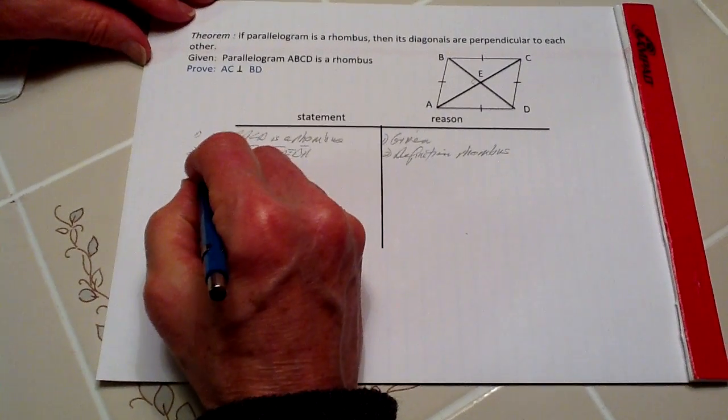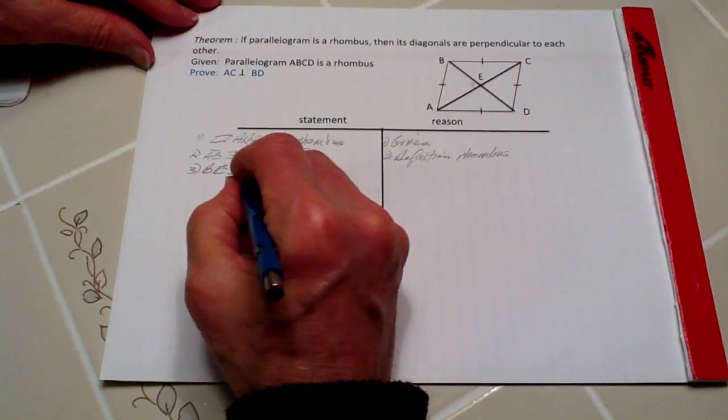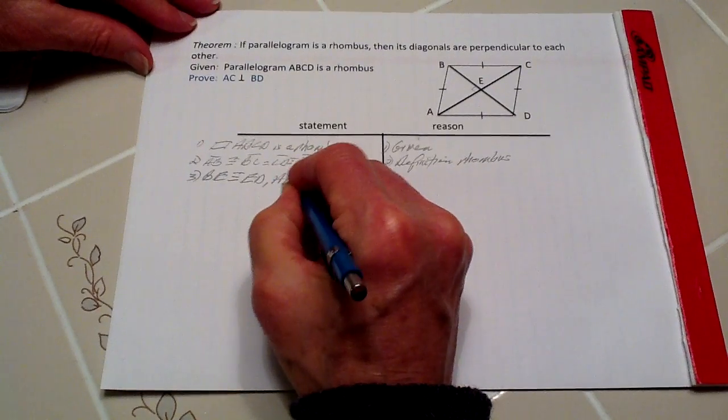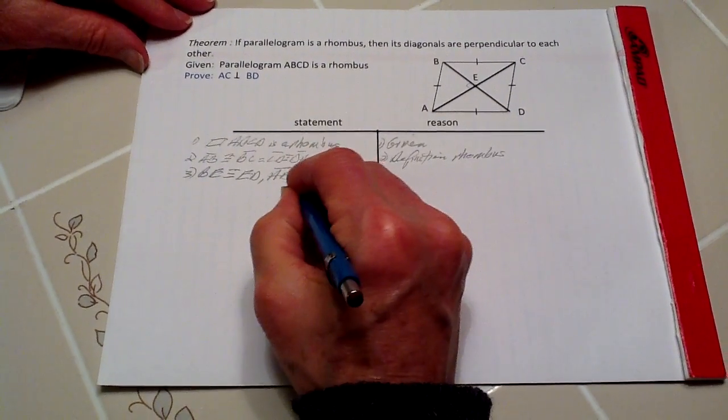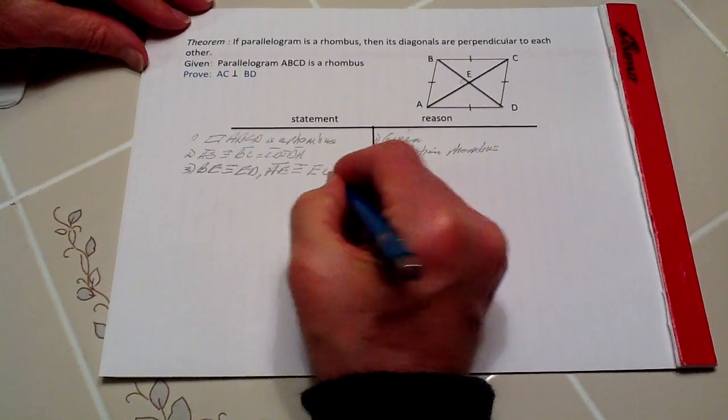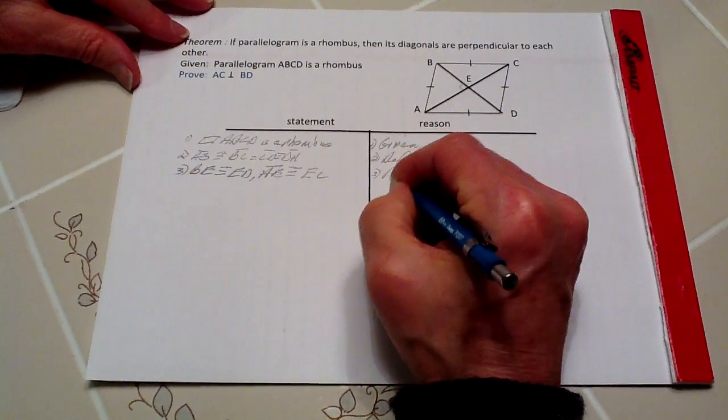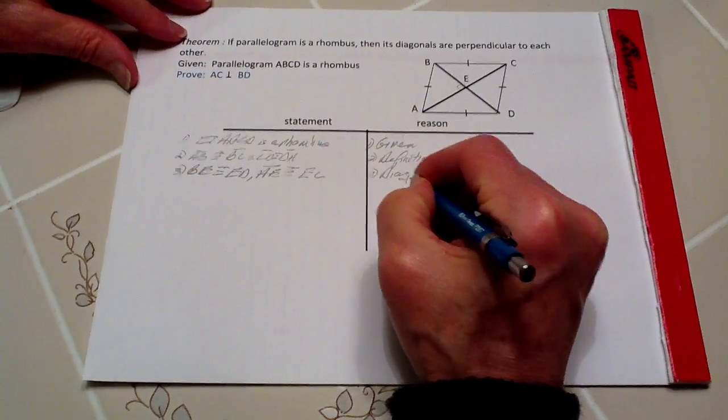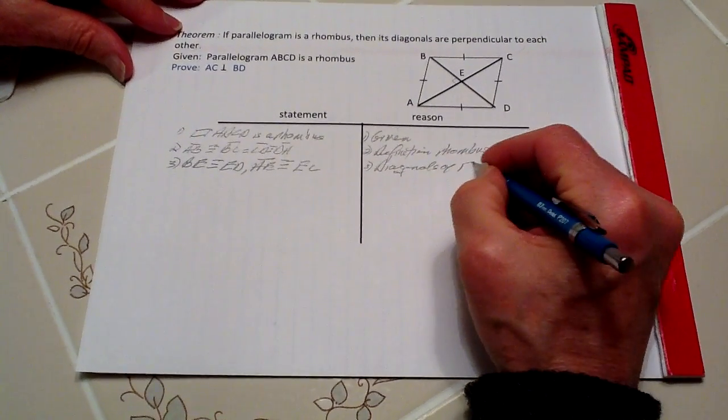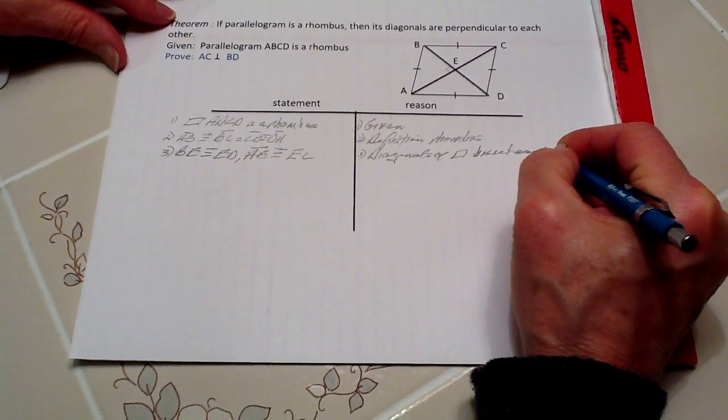That's a characteristic property of parallelograms, which we have proven earlier. Therefore, BE is congruent to ED, and segment AE is congruent to EC. That is because diagonals of parallelograms bisect each other.